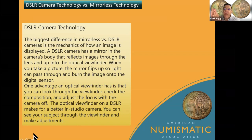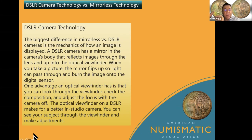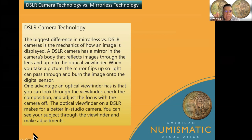There's a sensor on the back. The image comes in and hits the mirror. When you're ready to take the picture, the mirror flips up, and it's basically an optical viewfinder that you can look through to check your composition. The optical viewfinder on a DSLR makes it better for in-studio camera work such as coin photography.